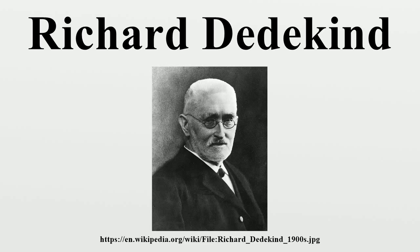He never married, instead living with his sister Julia. Dedekind was elected to the Academies of Berlin and Rome, and to the French Academy of Sciences. He received honorary doctorates from the universities of Oslo, Zurich, and Braunschweig.